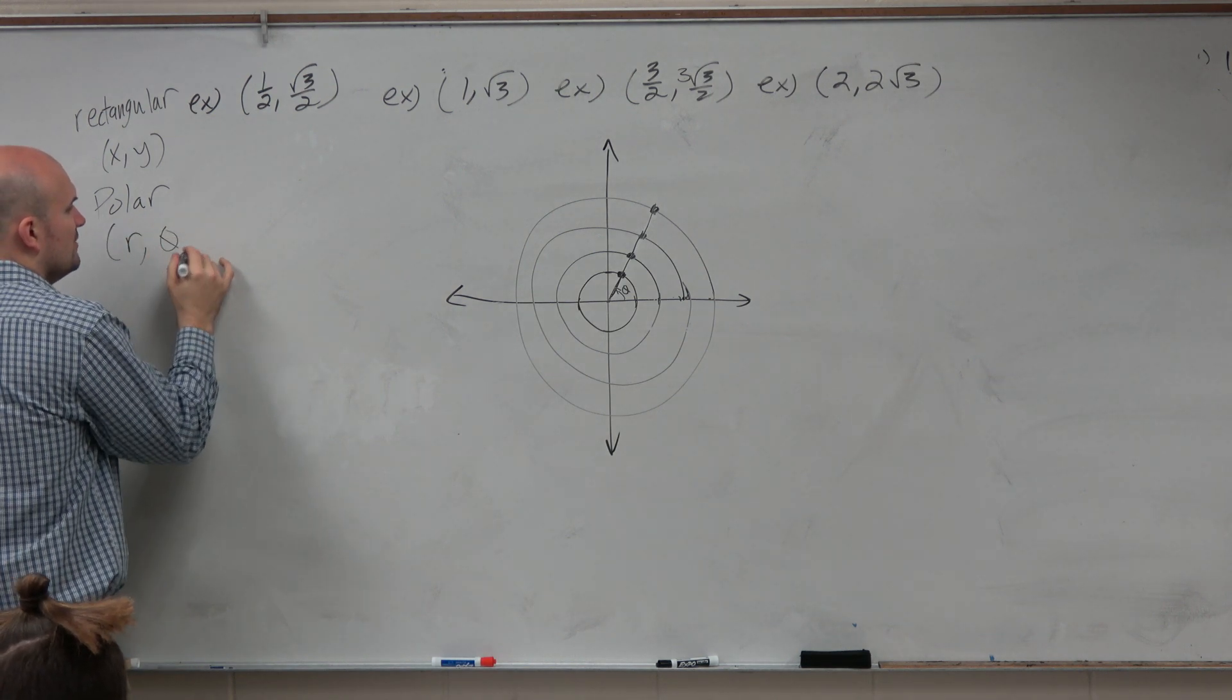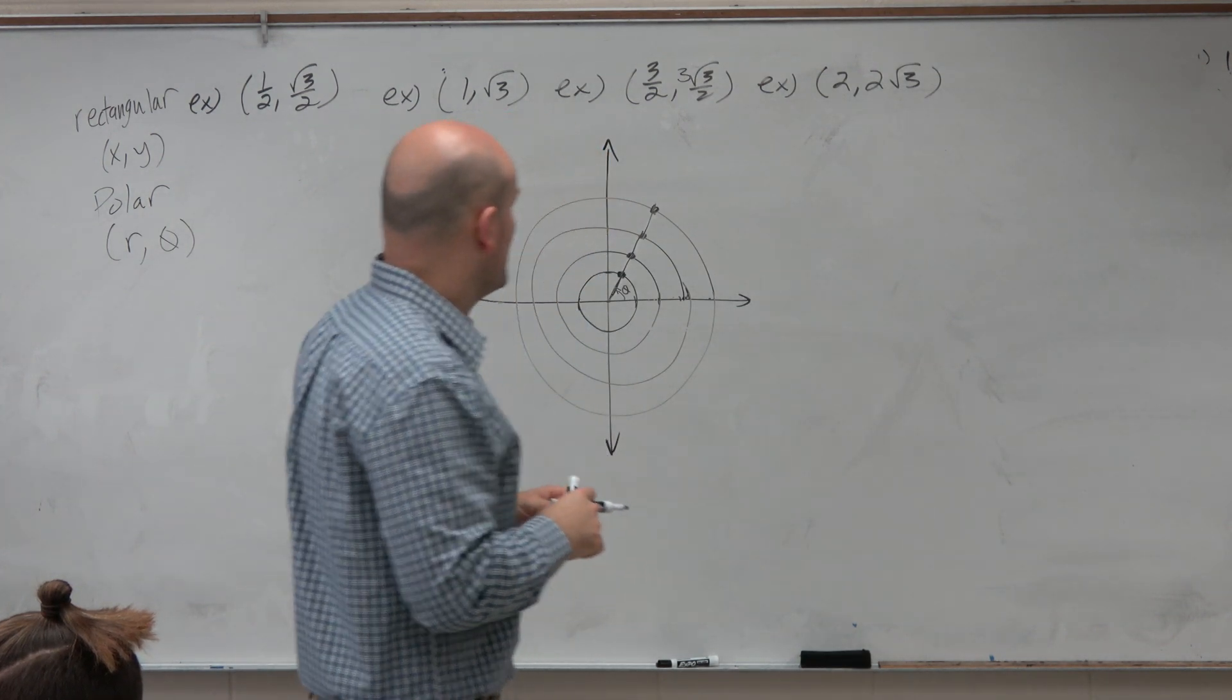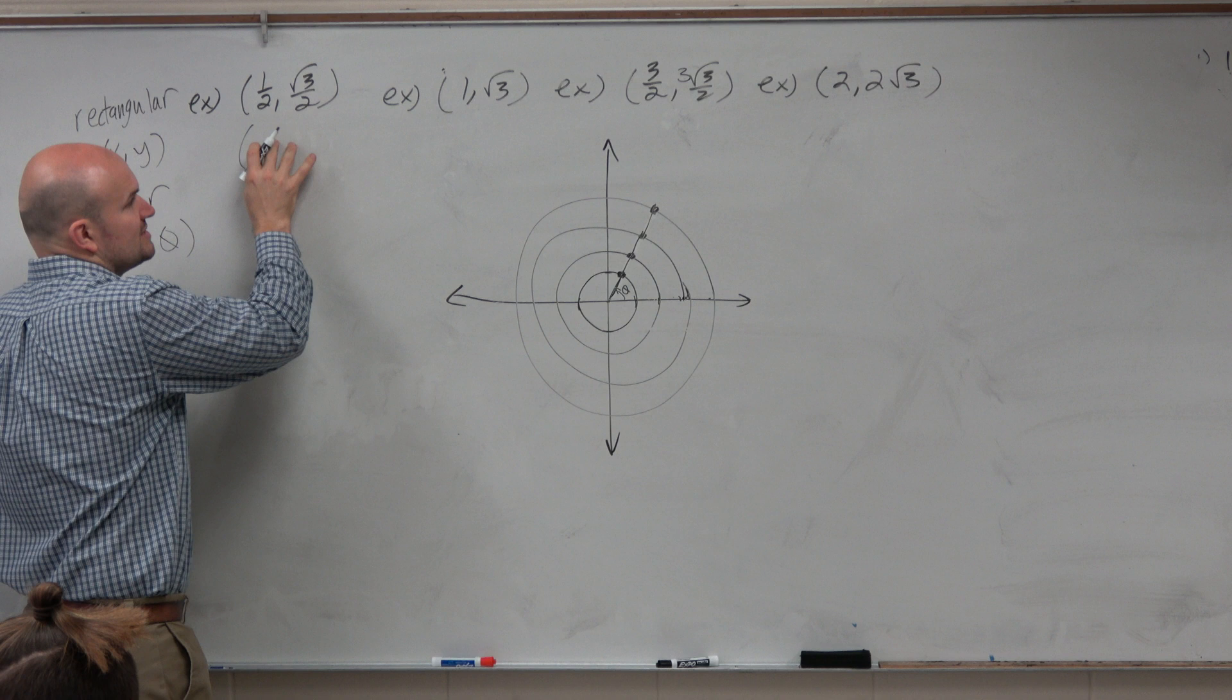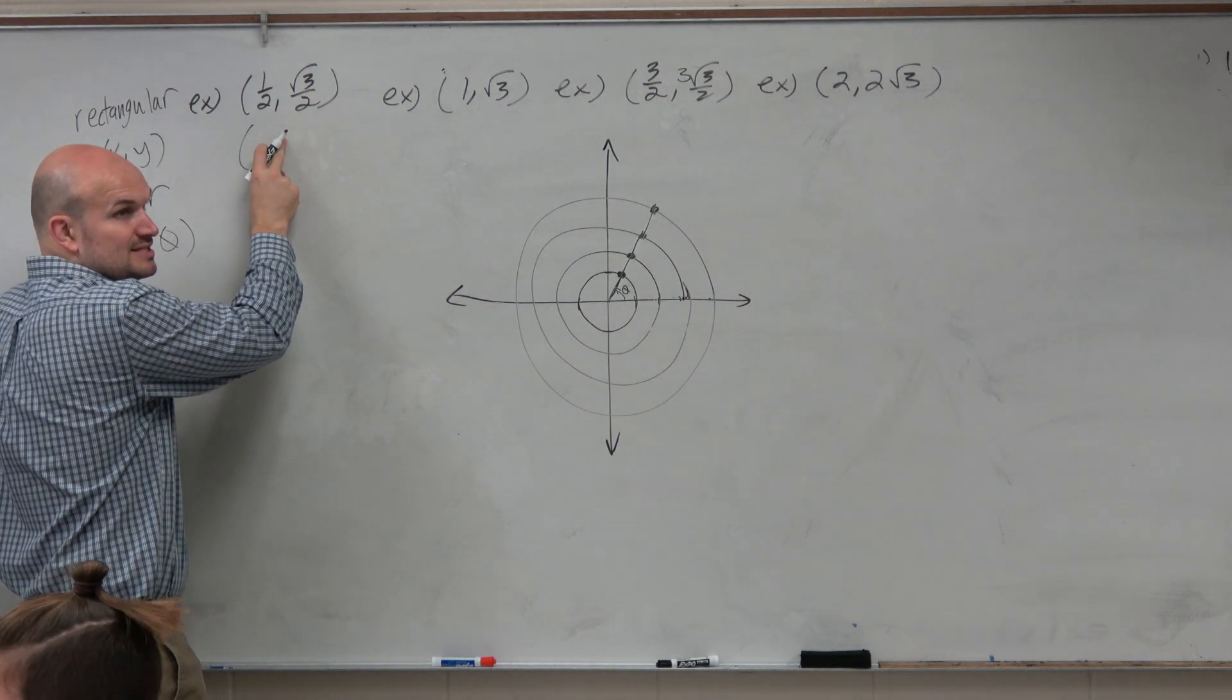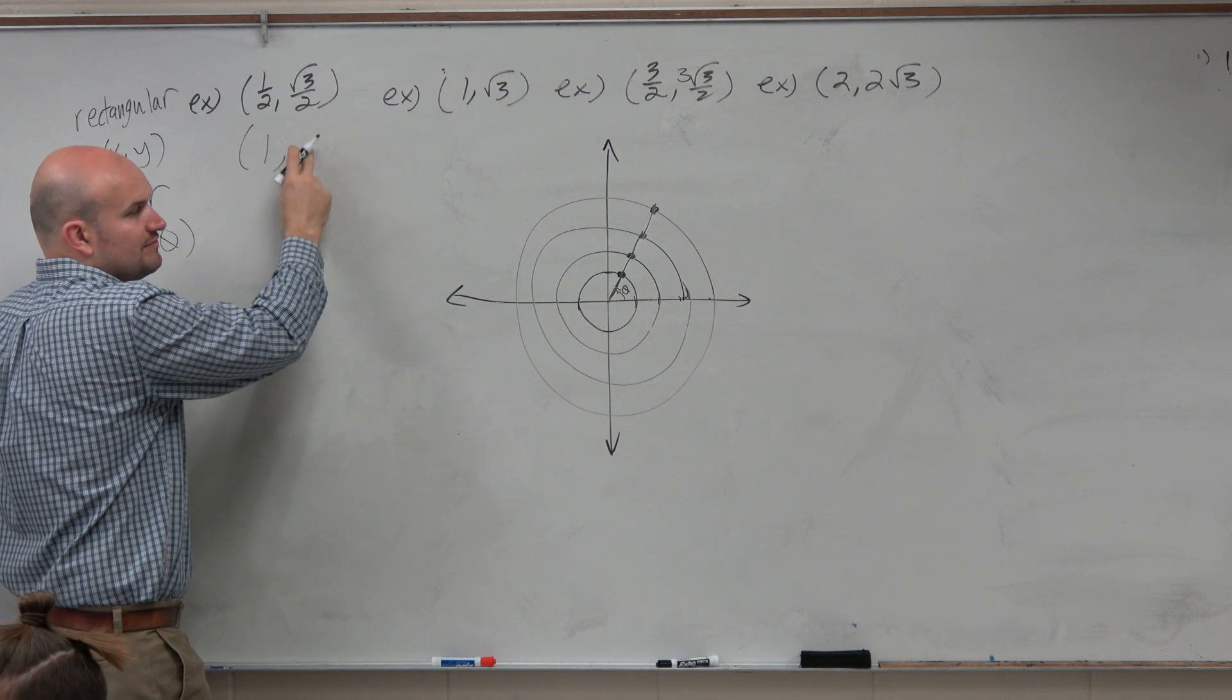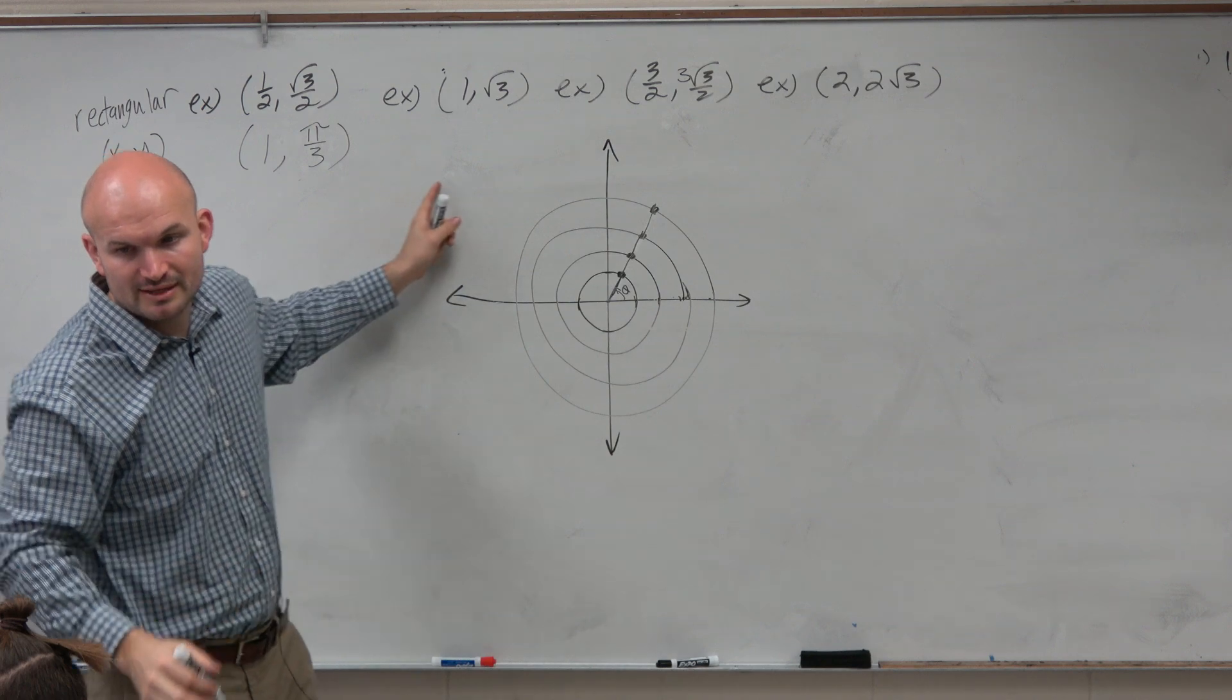And polar points are in the form of r, theta, which is also written up there on the board. So if I wanted to write these in polar points, I already know this is on the unit circle. So it has a radius of 1, and then the angle we already figured out was pi over 3.